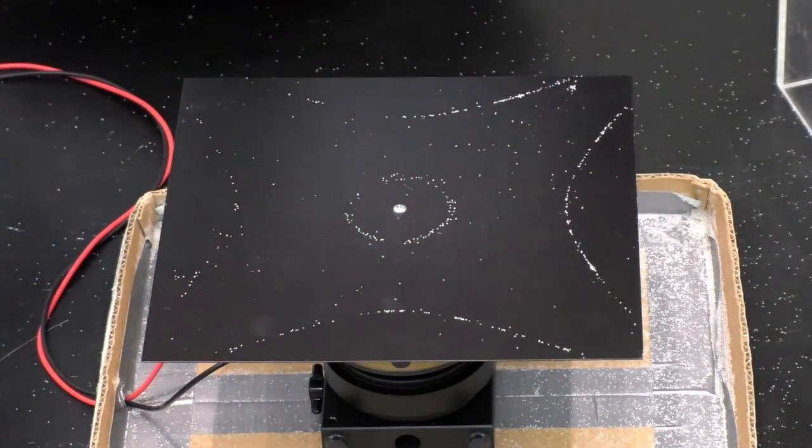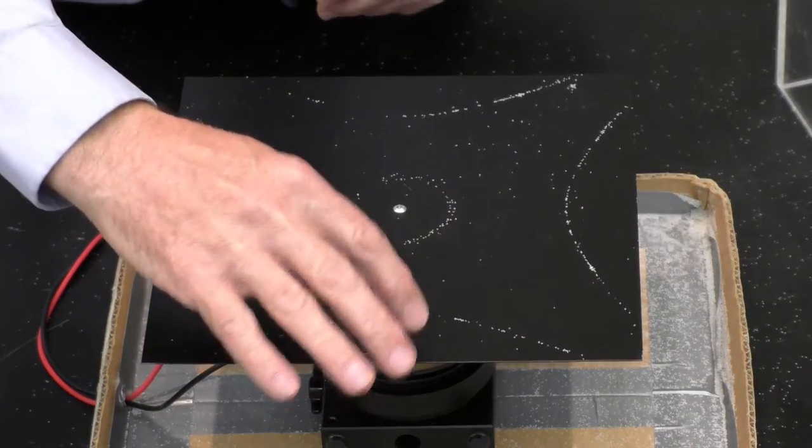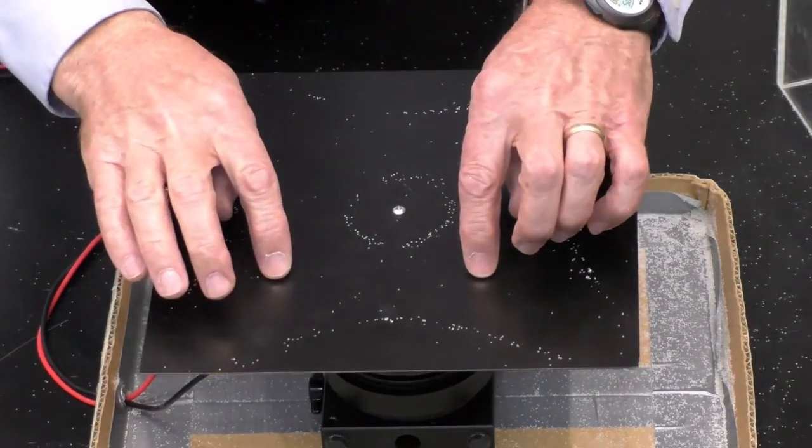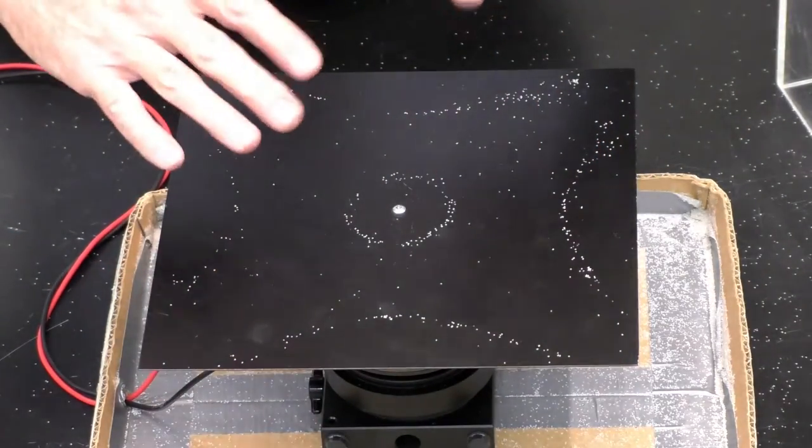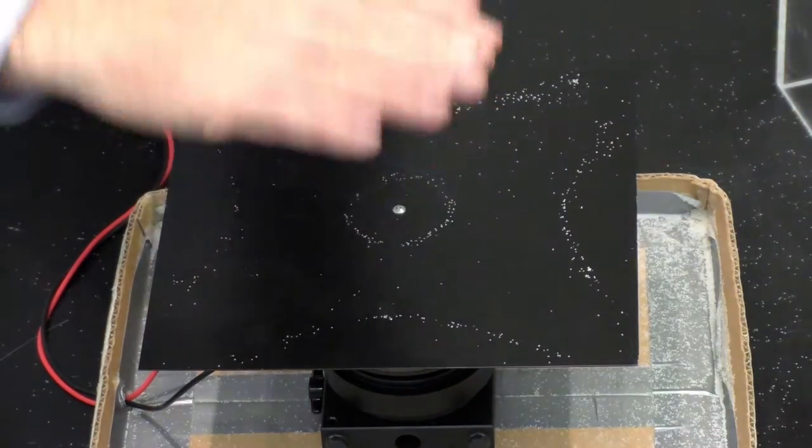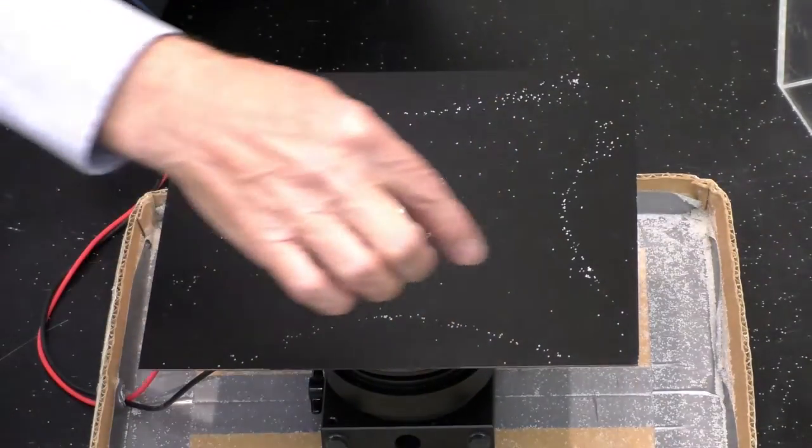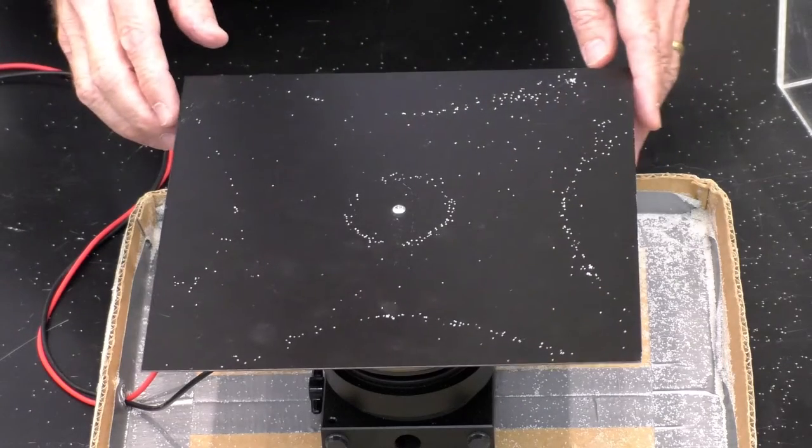And then half a period later, this section will be down, and then this whole section will be up. So it's vibrating back and forth with these nodal lines on the edges between segments that are vibrating.